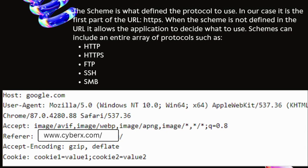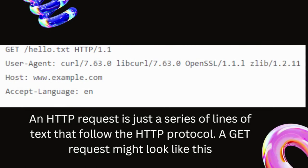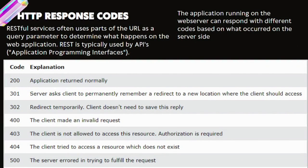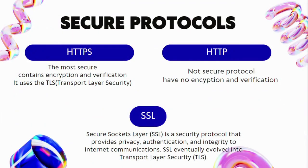HTTP Request and Response. An HTTP request is a sequence of lines following the HTTP protocol. A typical GET request might look like this: GET /path/to/resource HTTP/1.1. HTTP response codes, like 200 for success and 404 for not found, are crucial indicators of the server's response. RESTful services utilize parts of the URL as query parameters, determining the actions within the web application. These APIs enable applications to communicate seamlessly.